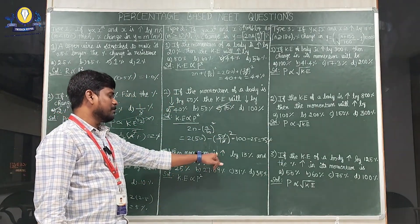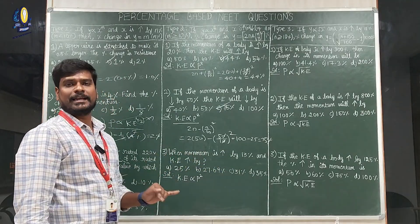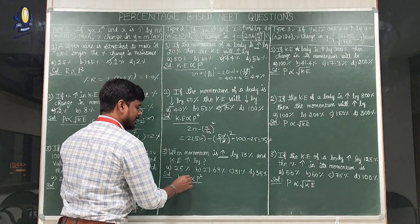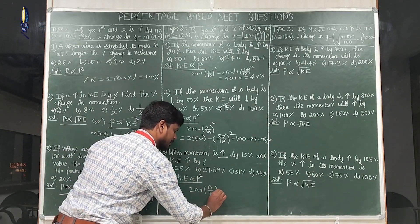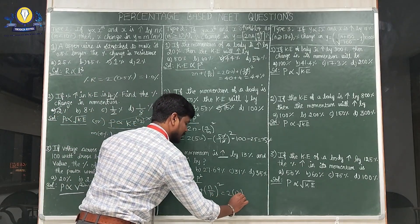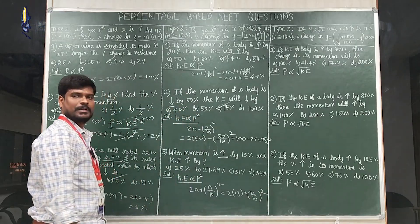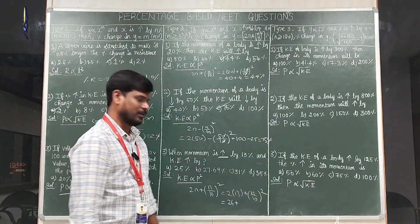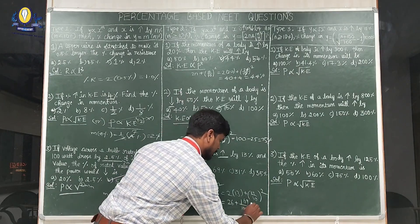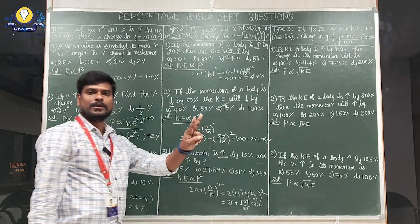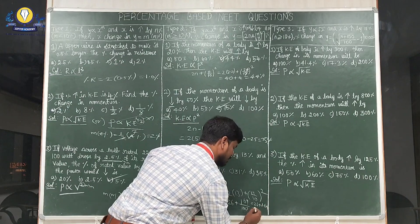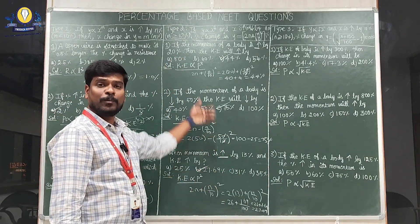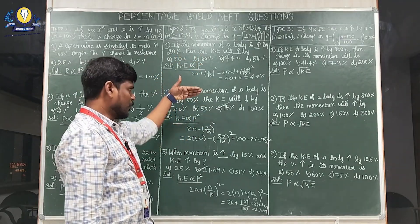Third question: when momentum is increased by 13%, kinetic energy increases by? Kinetic energy ∝ momentum², so using the increase formula: 2n + (n/10)² with n = 13: 2×13 + (13/10)² = 26 + 169/100 = 26 + 1.69 = 27.69%. The answer is 27.69%. If you use this formula you will get the answer within 30 seconds.